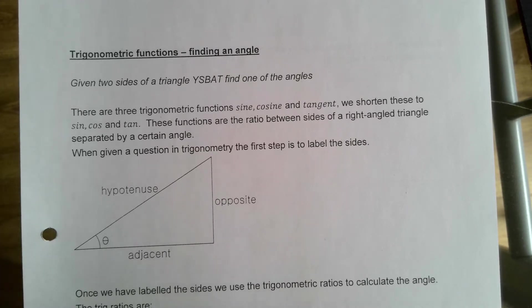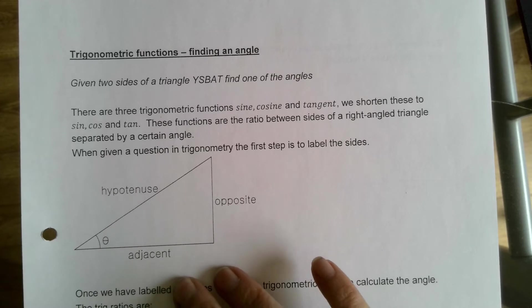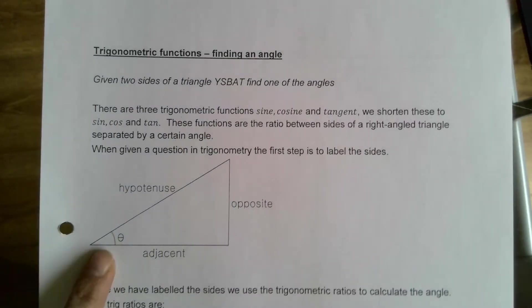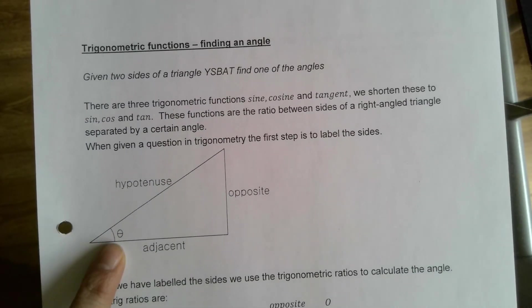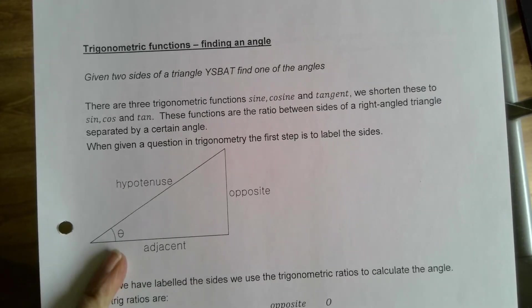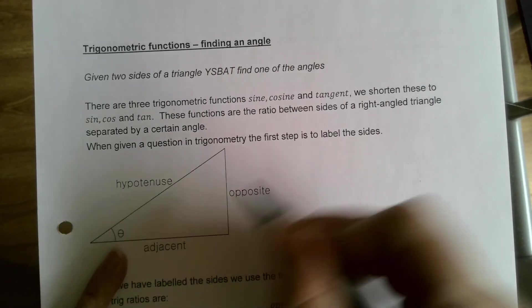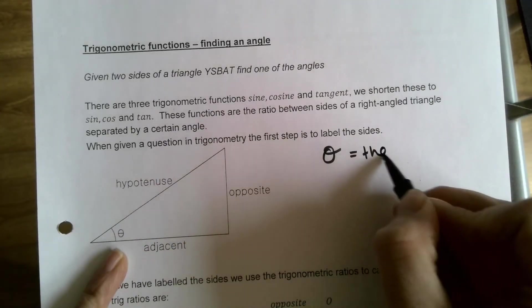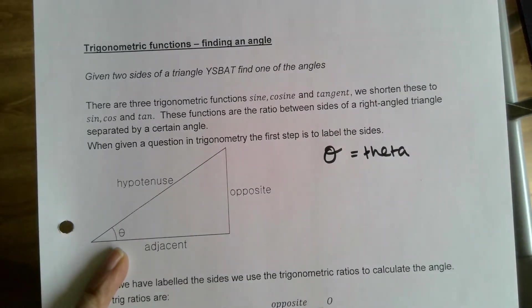Before we go into the rules, let's talk about the triangle itself. You will be given a triangle in a question and one of the angles will be labeled. The thing we use to label angles most commonly is theta - it's just a Greek letter. When typed it looks like a circle with a line through it, but when I write it, it's like a zero with a little extra loop on it. You might want to make a note of that.